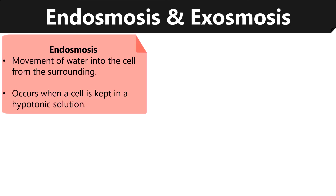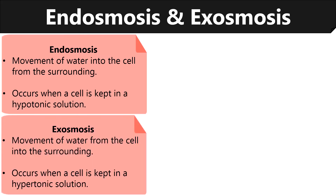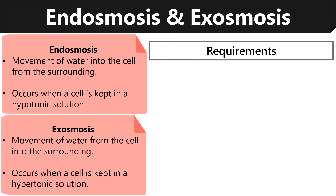Endosmosis and exosmosis are the two common types of osmosis. Endosmosis is a process in which water moves into the cell from the surrounding solution; it occurs when a cell is placed in a hypotonic solution having a high solvent concentration. Exosmosis is a process in which water moves out of the cell into the surrounding solution; it occurs when a cell is placed in a solution having a low solvent concentration.